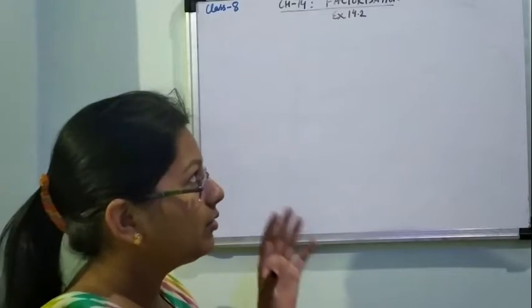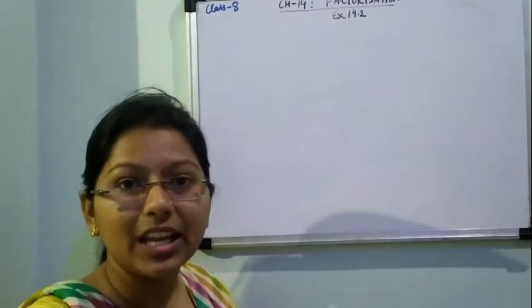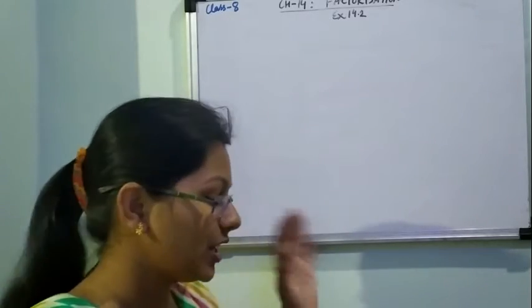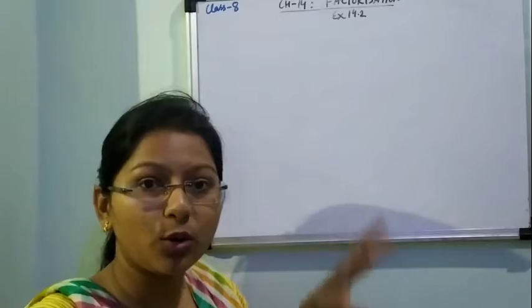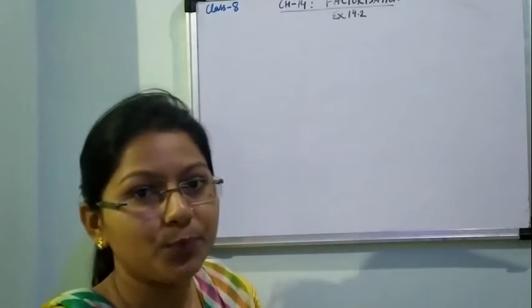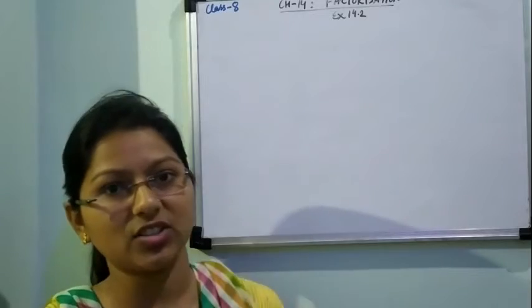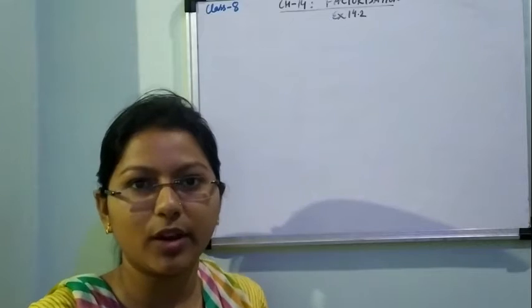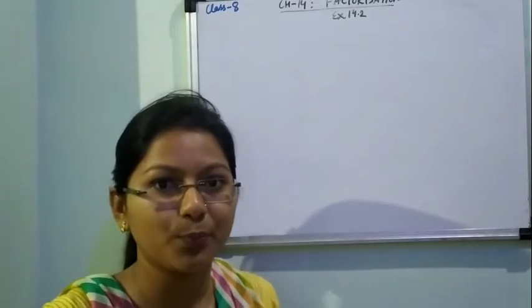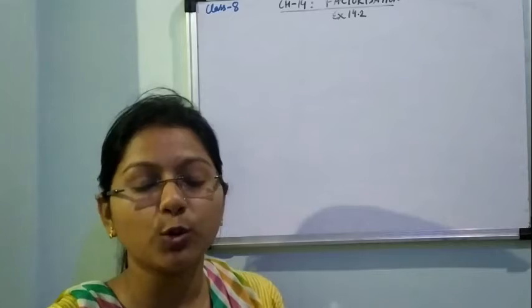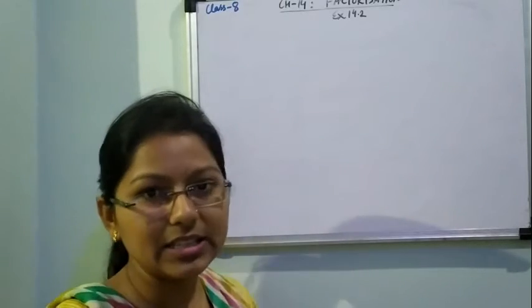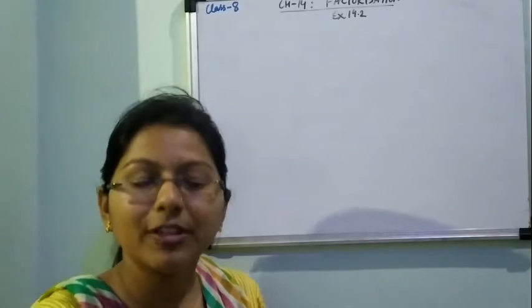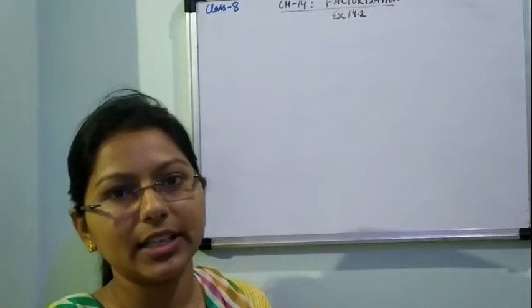The second way we learned is to see whether any of these four identities is applicable to the given algebraic expression. In the first and second identity, it is difficult to understand that the first and last terms are perfect squares. It means there are two perfect squares and one should be in the form of 2ab or minus 2ab. The third identity is easy to identify - if two terms are given and both terms are perfect square with minus sign in between, then obviously third identity is applicable.